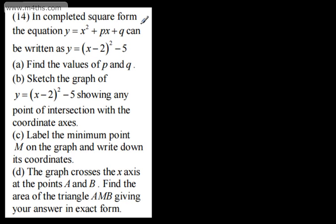Question number 14. In completed square form, the equation y = x² + px + q can be written as y = (x - 2)² - 5. In part A, we need to find the values of p and q. We can do it from this form. I think, though, easier is just to expand it out and collect up.